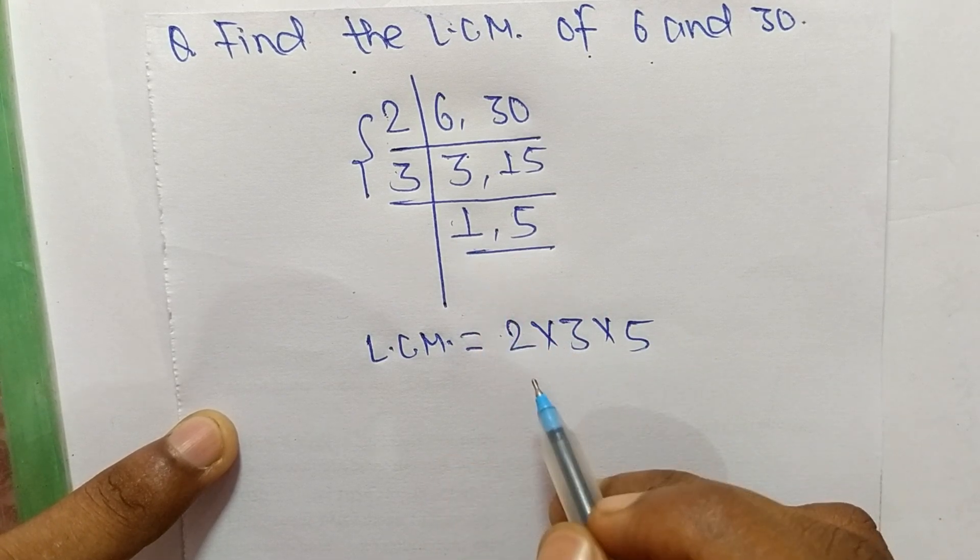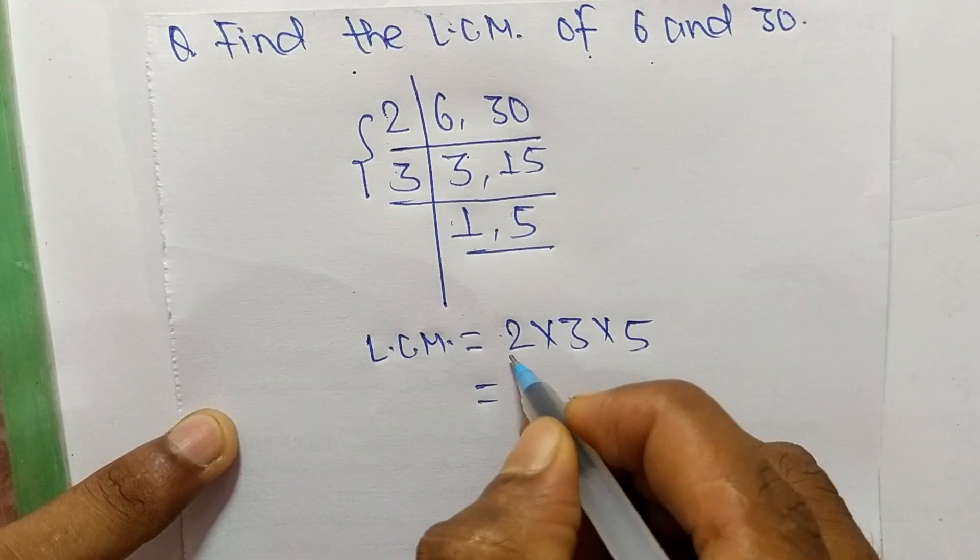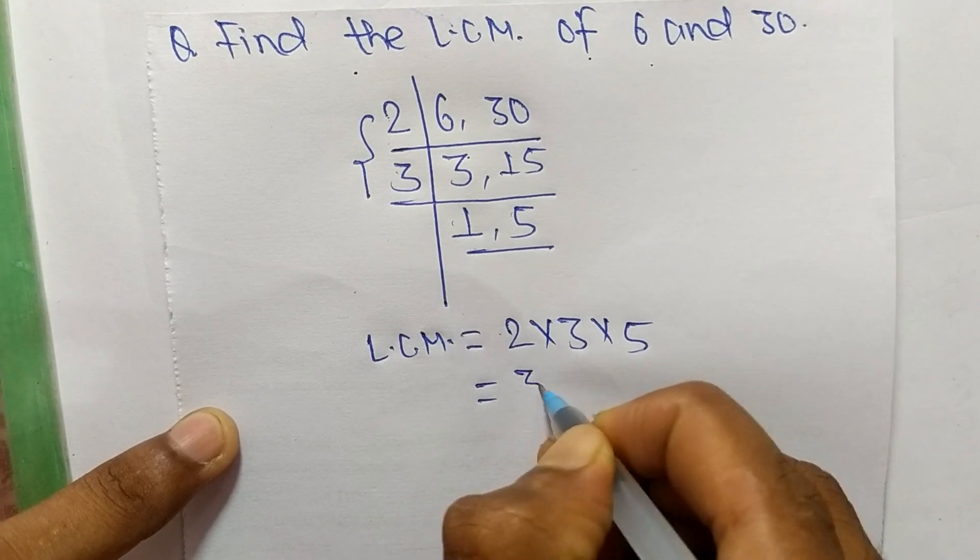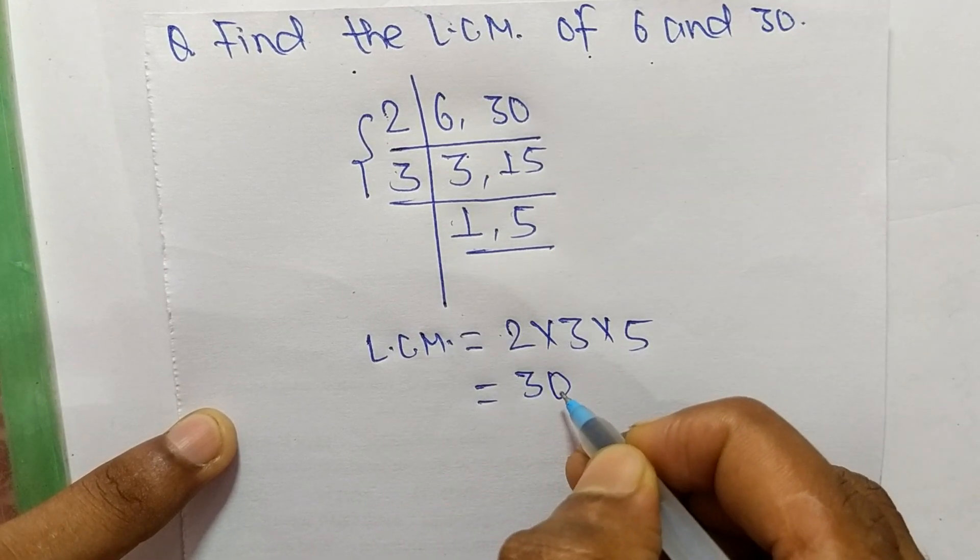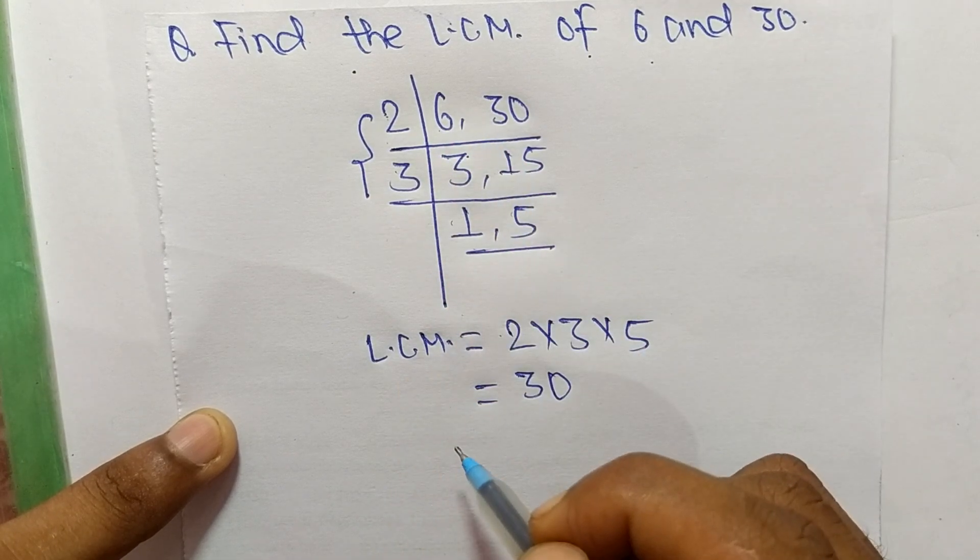Now, 2 times 3 equals 6, and 6 times 5 equals 30. So 30 is the LCM of 6 and 30.